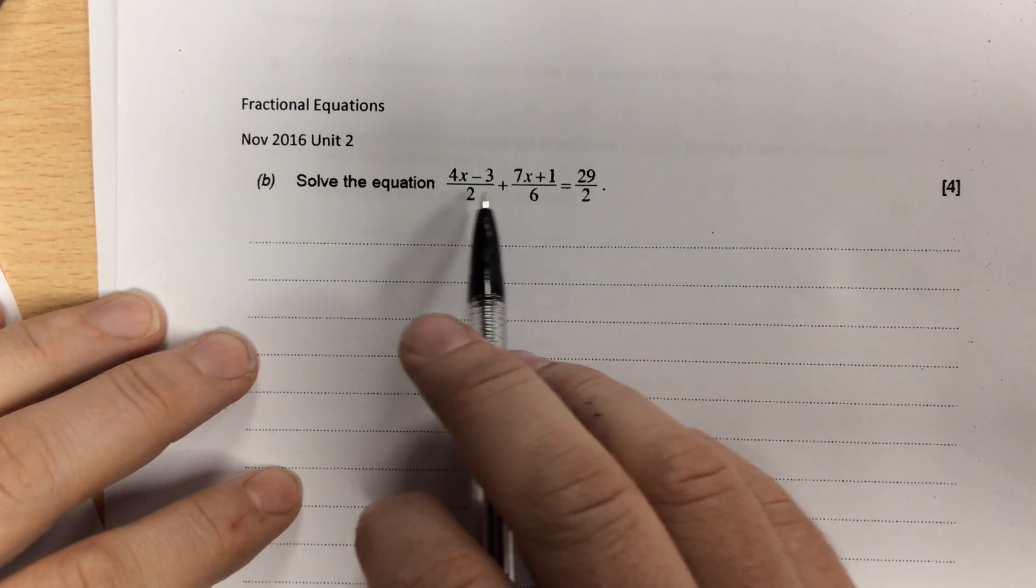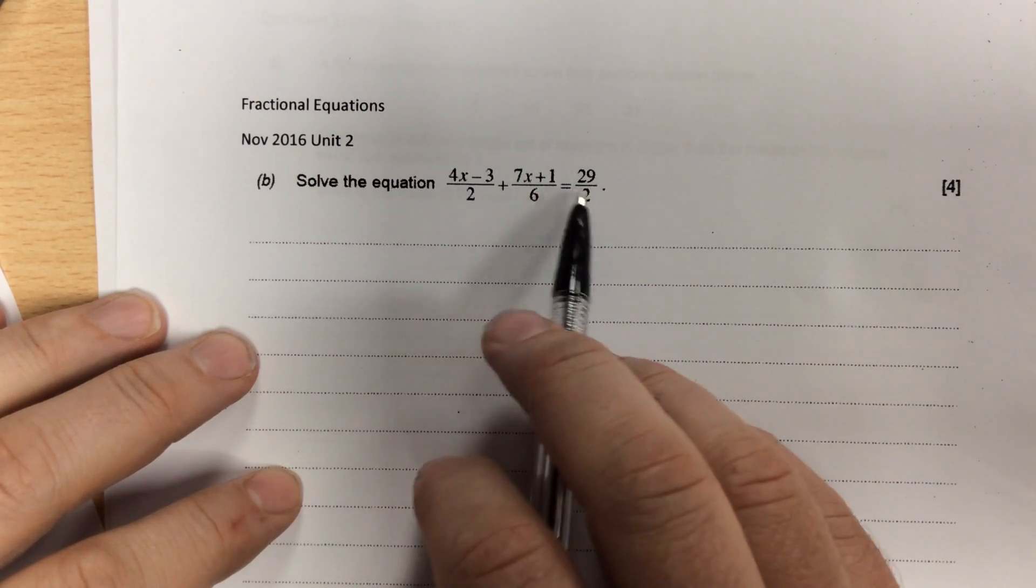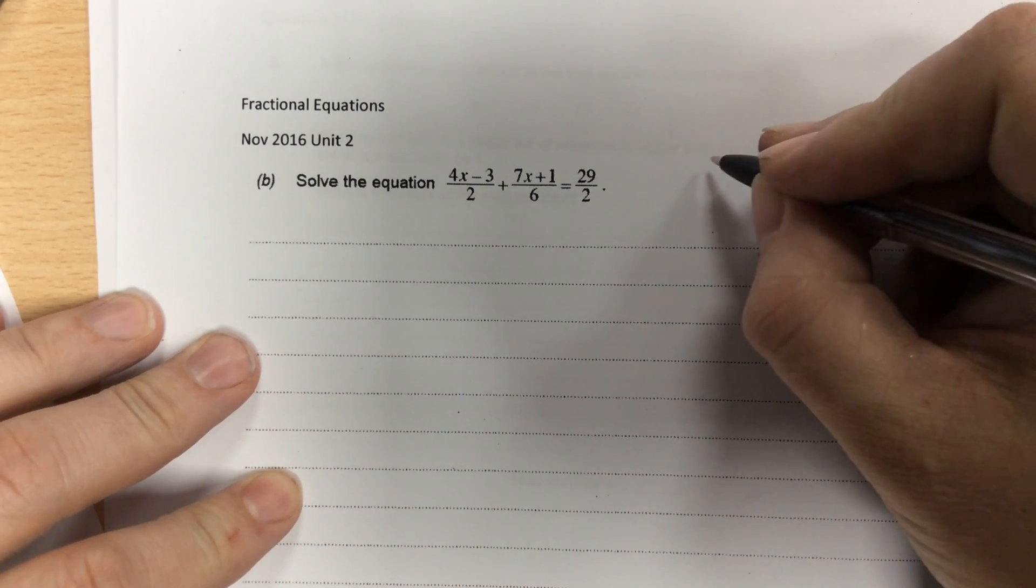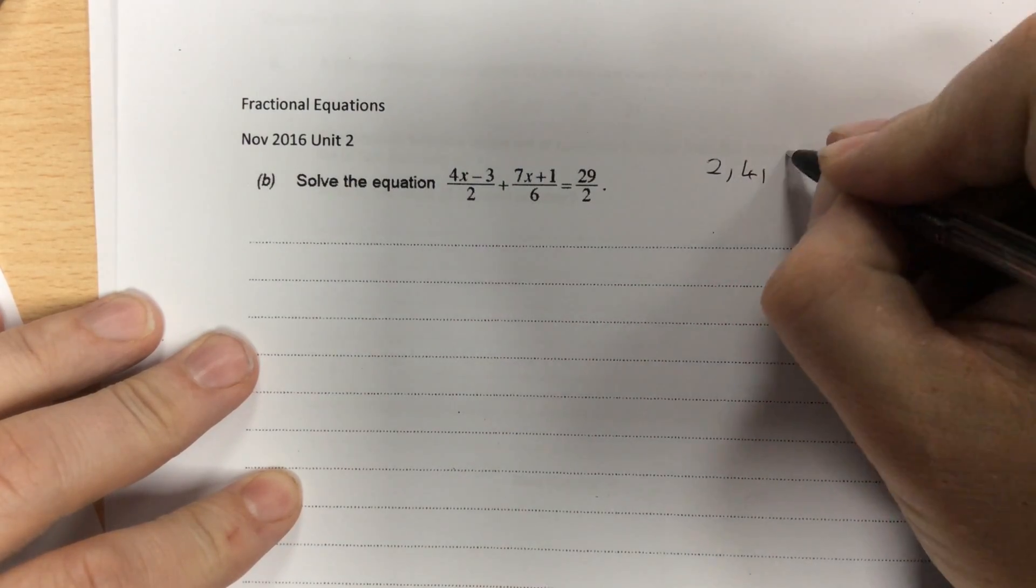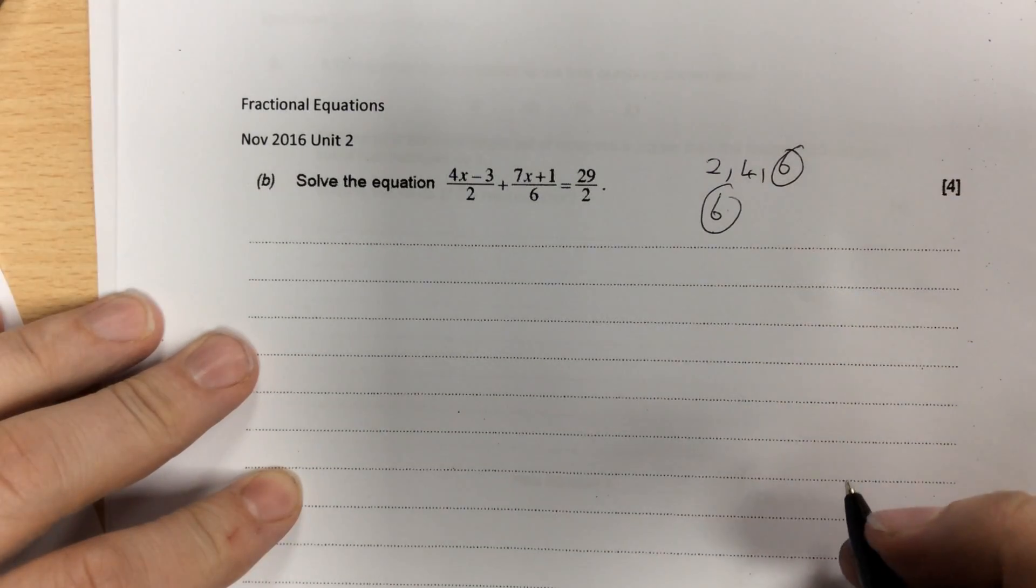Fractional equations. With these ones, it's important you look at what is the lowest number that 2 and 6 both go into. So any of them bottom numbers go into. So if I write down my 2 times table and my 6 times table, the first number that appears on both lists is 6.